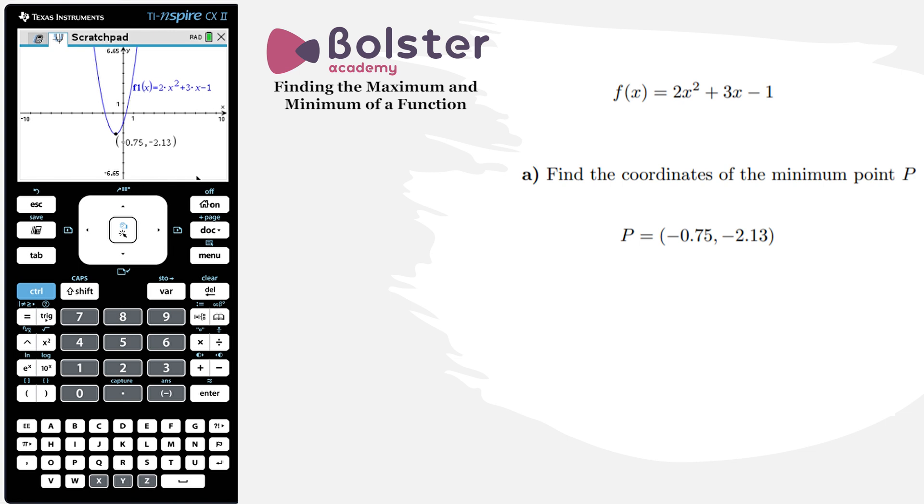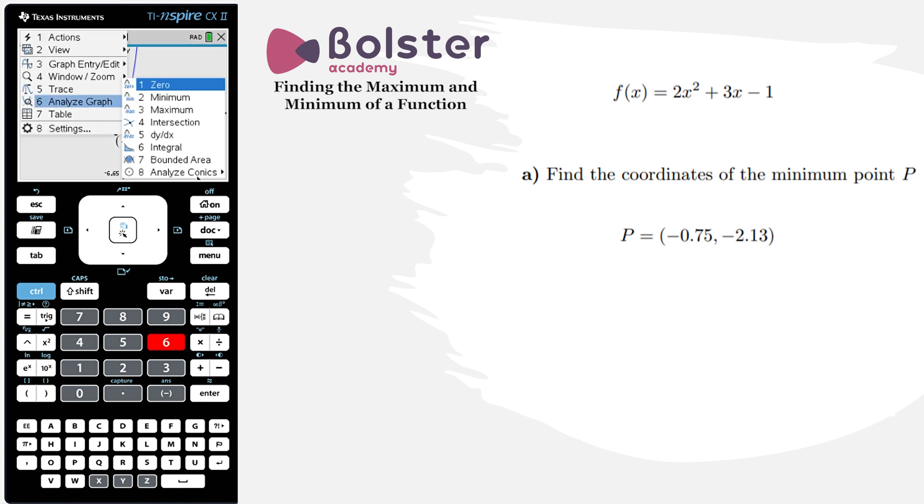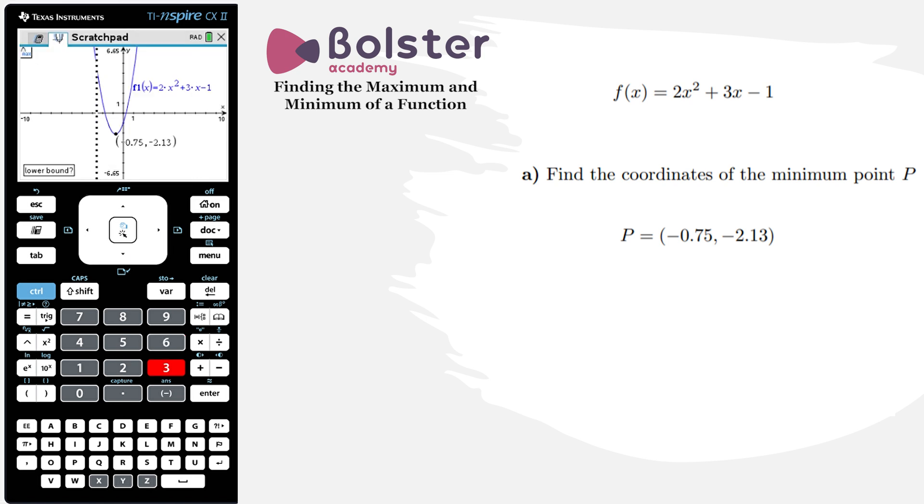But I can still find maximum points on this curve between an upper and lower bound. So if I hit menu and I hit analyze graph again, and this time I choose option number three, which is maximum. I'm asked to choose my upper and lower bounds.